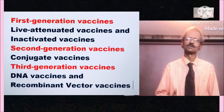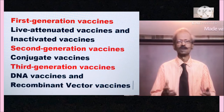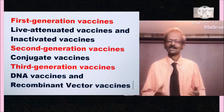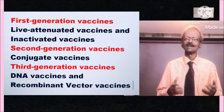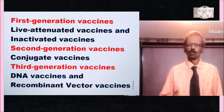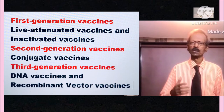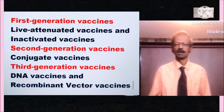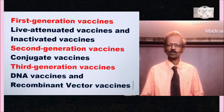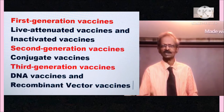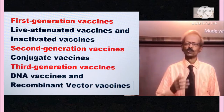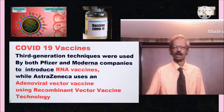Regarding the generation-wise development of vaccines: first generation vaccines are live attenuated and inactivated vaccines; second generation vaccines are subunit vaccines; and third generation vaccines are DNA vaccines and recombinant vector vaccines.